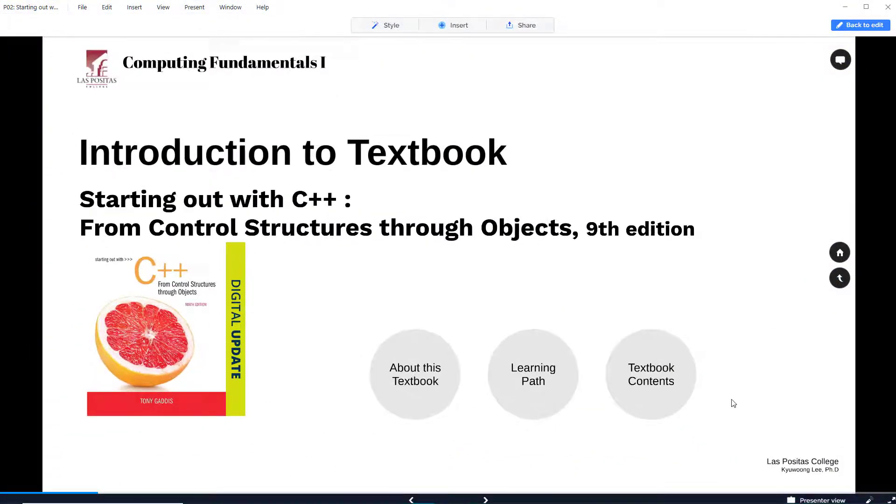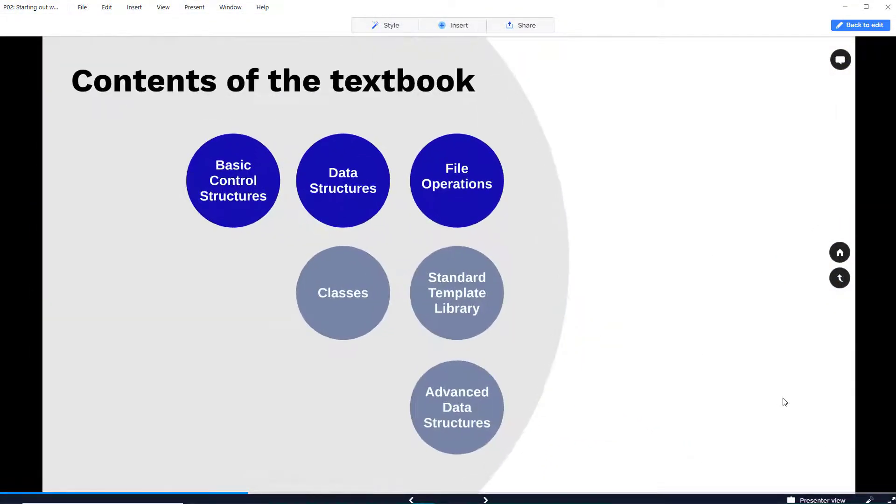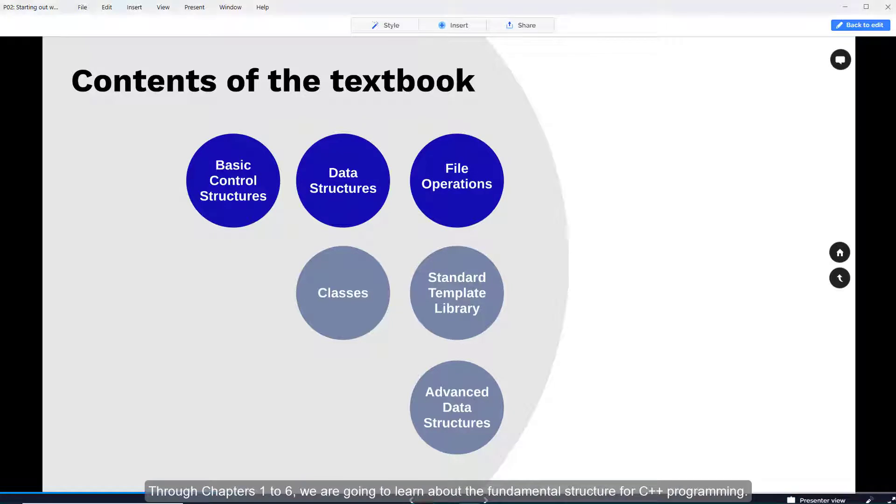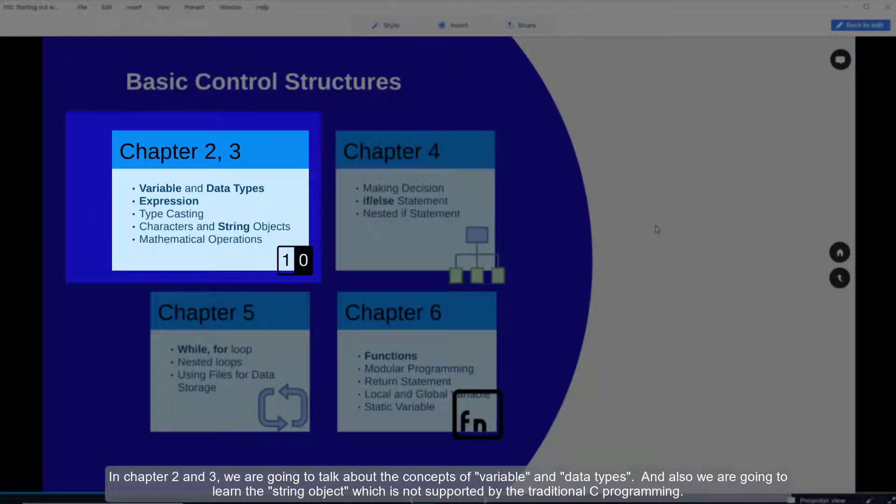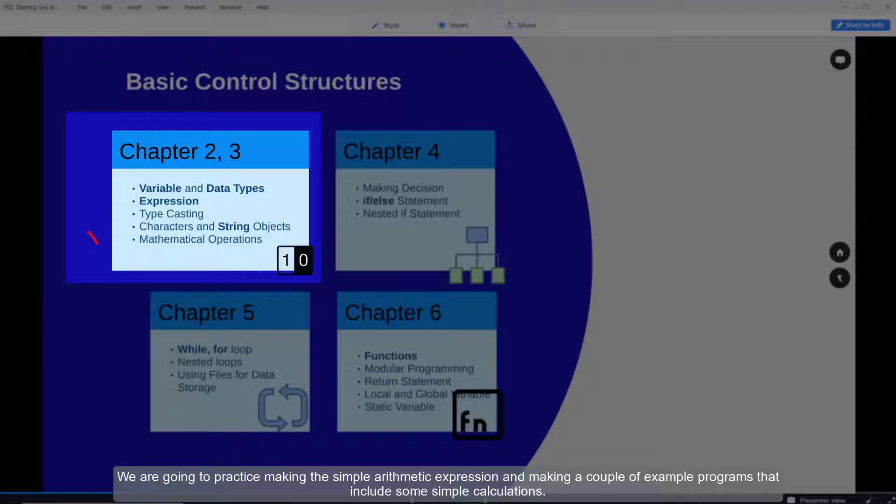Now let's take a look at more details about each chapter's contents. Through chapters 1 to 6 we are going to learn about the fundamental structure for C++ programming. In chapters 2 and 3 we are going to talk about the concept of variables and data types, and also we are going to learn the string object which is not supported by traditional C programming. We are going to practice making simple arithmetic expressions and making a couple of example programs that include some simple calculations.